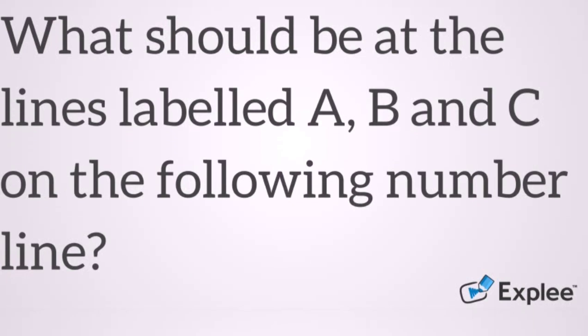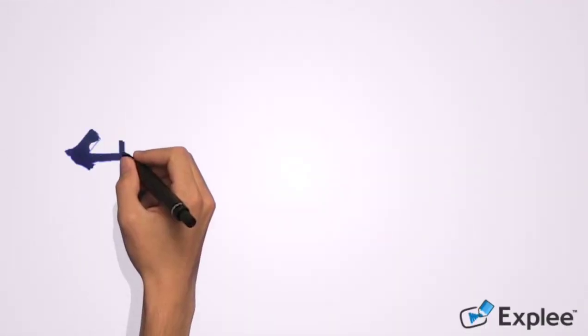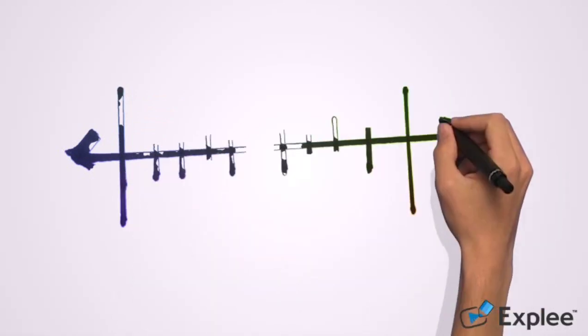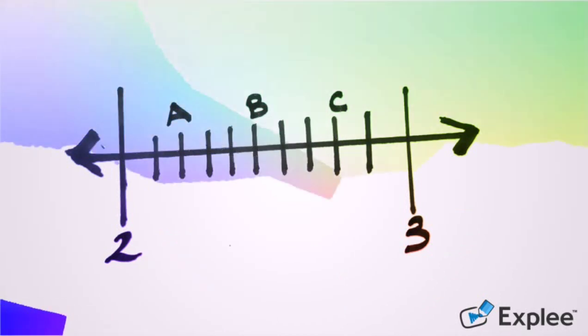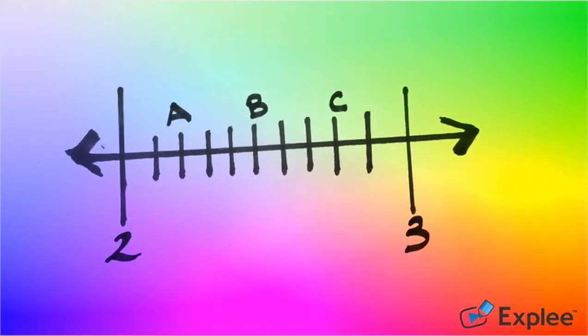For this you have to pay close attention as there are several intervals and several parts that you need to figure out. Remember that to get your denominator you count the intervals between the number two and the number three. To get the numerator you count the lines after the number two.